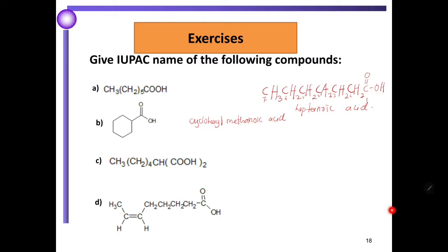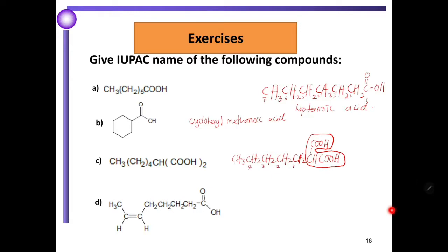Structure C: we have CH3 attached to 4 CH2 groups attached to CH2. The parent is propanedioic acid. The substituent numbering gives one, two, three, four, five. The name will become propanedioic acid.